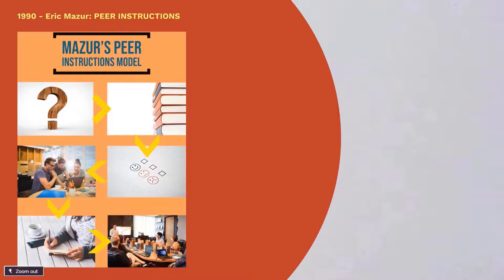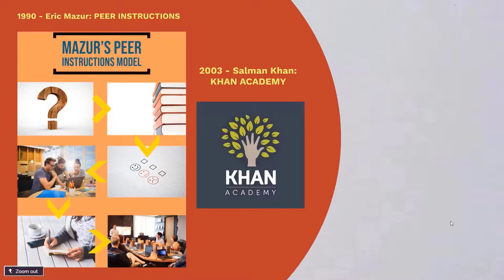In the next step, students discuss their decision-making process with other students and modify the answers. And finally, these answers are reviewed by the lecturer and he decides if the topic needs more explanation or if the next topic can be started. And I believe you've all heard about Khan Academy founded in 2003 by Salman Khan who was tutoring his cousin in mathematics over the internet and started to record videos for him.